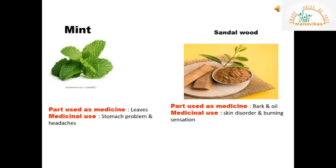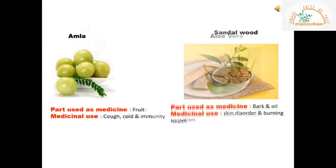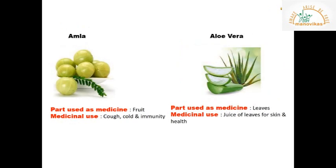Sandalwood: the bark and oil of the sandalwood tree are used as medicine and are used to cure skin disorders and burning sensation. Amla: the fruit of the amla tree is used as medicine and is used to cure cough, cold, and to boost immunity — that is, to protect the body from different kinds of diseases.